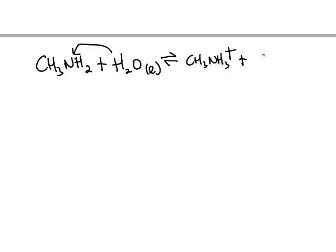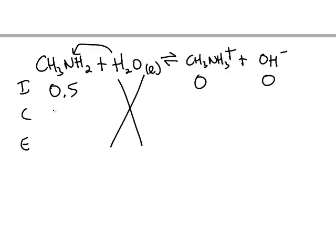So if we have methylamine reacting with water, it accepts a proton from the acid water, forms the conjugate acid, and water turns into hydroxide. The initial molarity is 0.5. Cross out the water. The reaction has to go to the right.